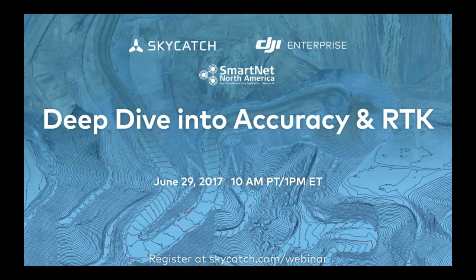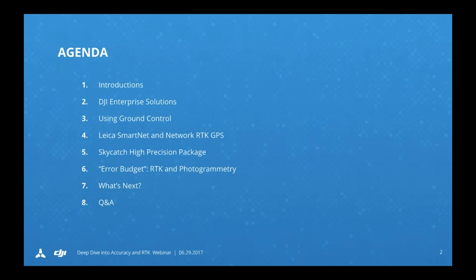I'm really happy to have on the line some folks who I've learned a lot about drone data from, and also GPS and RTK concepts. So with that, I think we'll jump right into the agenda for today. We're going to talk basically about collecting drone data using ground control — a really common method we use to bring drone data into our projects to lock those things into our real-world coordinate systems. One of the things we're going to feature today is using network RTK in order to do that.